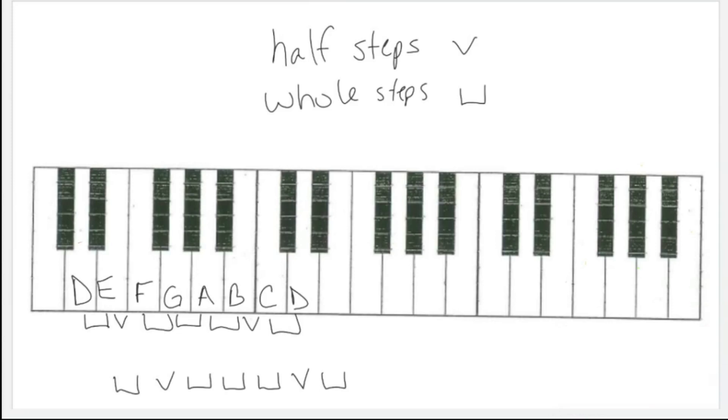Look for the different half steps and whole steps in the music you play. Can you find any examples of the D Dorian scale or other Dorian scales? That is all for this micro lesson. Thanks for watching.